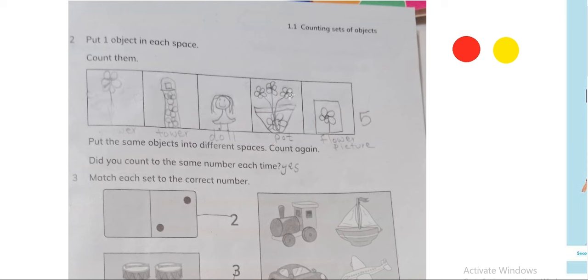Now the next question is: put the same objects into different spaces. These are the same objects - the number of objects will remain the same, they will remain the same five objects - but put them in different spaces like this.